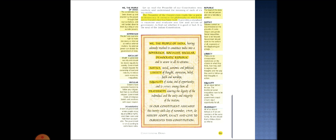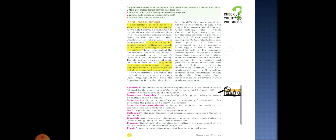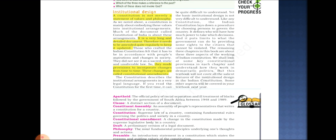Coming to the last topic: 'Institutional Design.' A constitution is not merely a statement of values and philosophies — a constitution is mainly about embodying these values into institutional arrangements. We need to follow all these values and ideas given in the preamble for the country to develop successfully. It is a very long and detailed document, therefore it needs to be amended quite regularly to keep it updated.